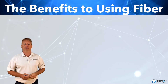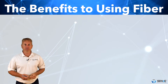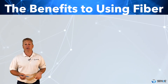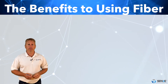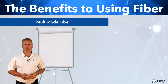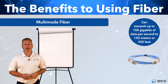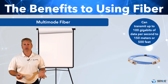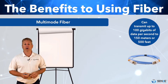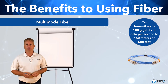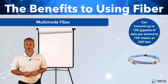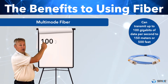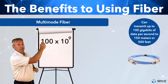We'll talk more about the different types of fibre in Module 2. In the meantime, here are a couple of interesting little facts about fibre. Multi-mode fibre can transmit 100 gigabits of data per second up to approximately 150 metres or 500 feet. That's 100 times 10 to the power of 9 bits per second, or the number 100 with nine zeros after it, bits per second.